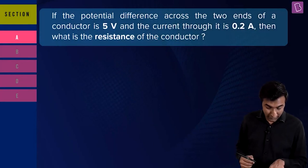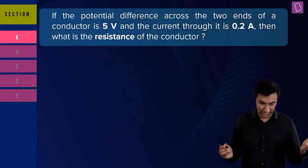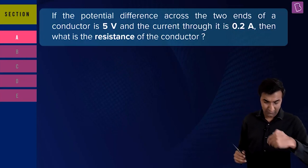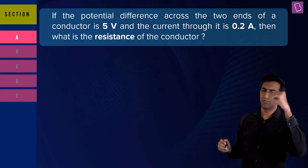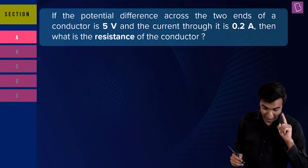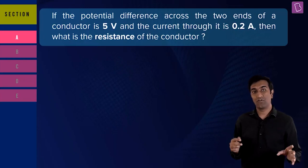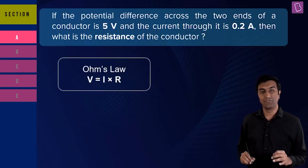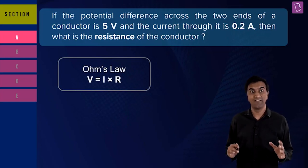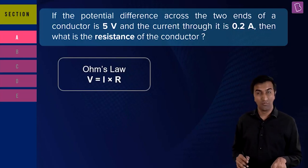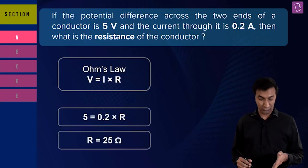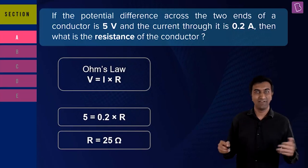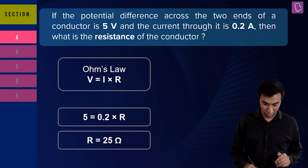First physics question from Section A: 'The potential difference across two ends of a conductor is five volts and current is 0.2 A. What is the resistance?' Use Ohm's law — V = IR. Write it down slowly, substitute: R = V/I = 5/0.2 = 25 ohms. Don't rush and make errors. These are easy marks — make sure you get them.